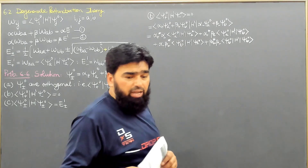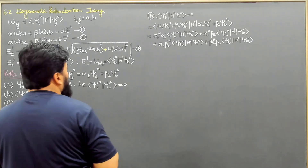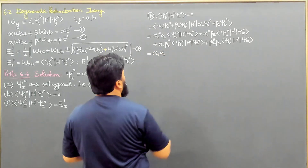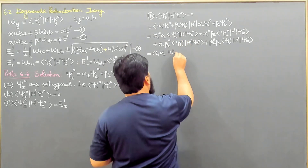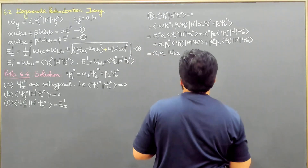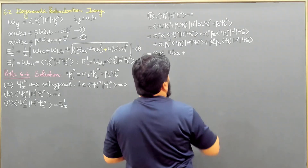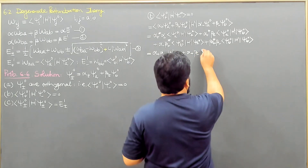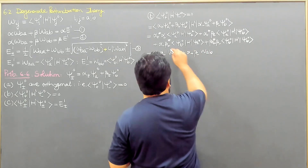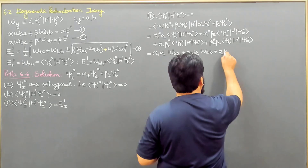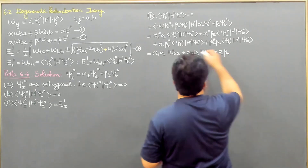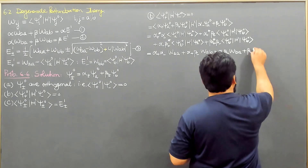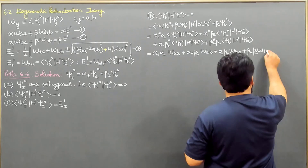We simplify by writing in terms of W_ij notation. So this becomes: α⁺*α⁻·W_AA + α⁺*β⁻·W_AB + α⁻*β⁺·W_BA + β⁺*β⁻·W_BB.